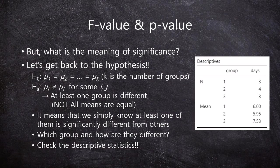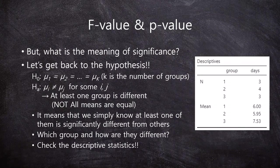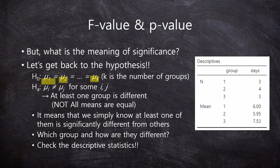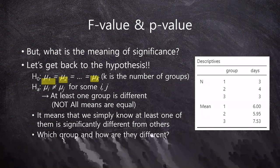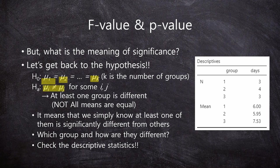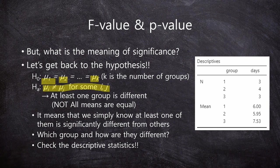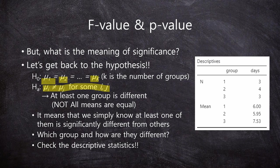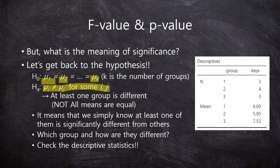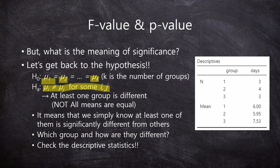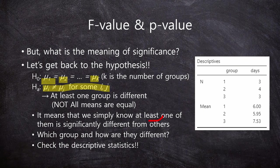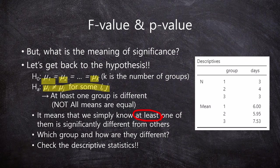But here, we have to ask a question: what is the meaning of significance in ANOVA? Let's get back to the statistical hypothesis. The null hypothesis was μ1 = μ2 = μk, all μ's are the same, where k is the number of groups. In the alternative hypothesis, any μ's are not equal. It means that at least one group is different. In other words, it means that not all means are equal.